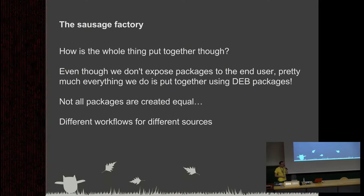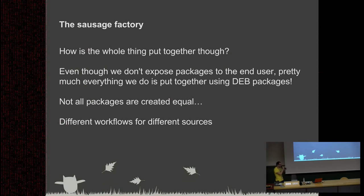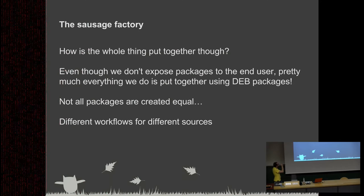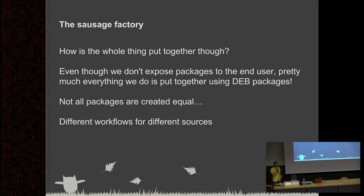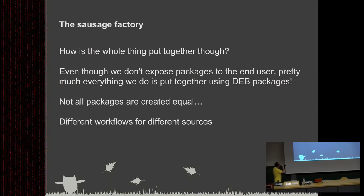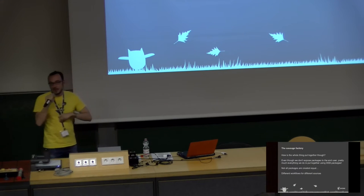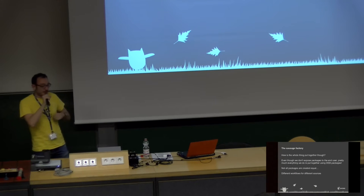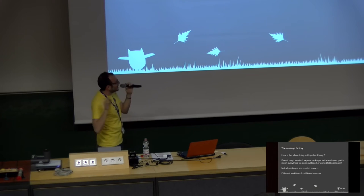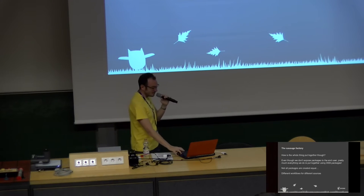So how is the whole thing put together? It turns out there's a lot that goes into making something with all these components. Even though we don't expose packages to users, everything is put together with packages in the back end. We use Debian packages and have a few different ways to create those Debian source packages, and then a few more ways to go from source packages to binaries, to Flatpaks, and to OSTree commits. Not all packages are created equal, so we have a few workflows.